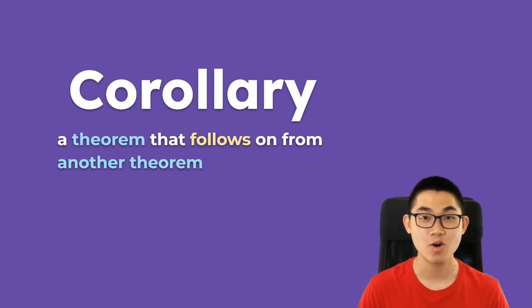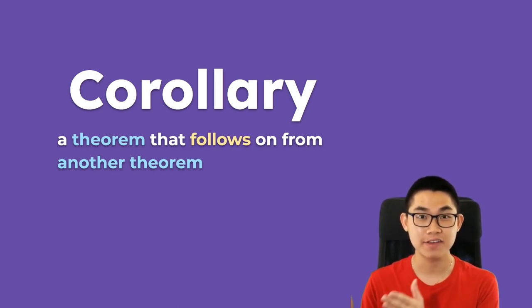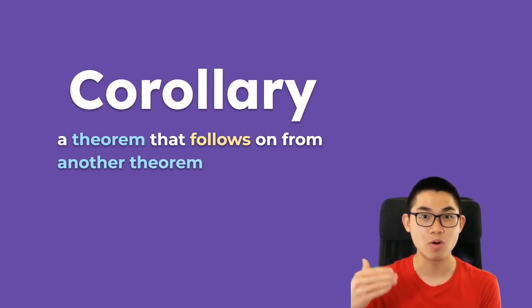A corollary is a theorem that follows from another theorem. So for example, you have theorem A, right? So from theorem A, you do a bit of math and you discover something significant. And that significant thing is also a theorem, but it's also called a corollary.